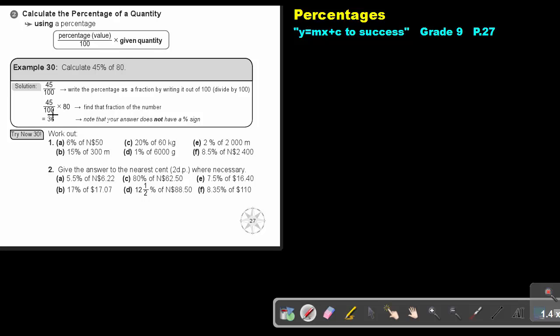If this is kg, this is kg. If this is meter, then this is meter. And if there stands nothing, then there also stands nothing. I want you to do try now 30. I want you to do number A as well as number F, and then also do for me number 2. Let's make number E. Stop the video, and as soon as you are finished, you can continue with the video.